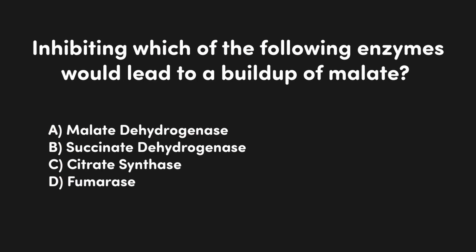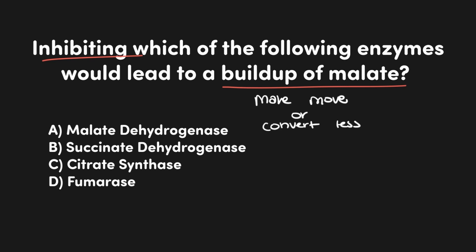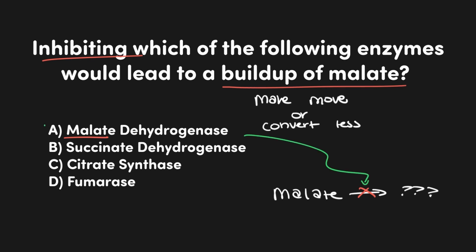Now let's look at another example. This question asks: inhibiting which of the following enzymes would lead to a buildup of malate? A buildup of malate could happen if we prevent the conversion of malate into something else, so we'd be looking for an enzyme that has malate as a reactant. Since enzymes tend to list their reactant in their name, we'd look for an enzyme with malate in its name. Answer A, malate dehydrogenase, is a great fit, whereas B, C, and D don't mention malate. If we inhibit malate dehydrogenase, malate gets stuck and cannot be converted into a different molecule. A is correct.